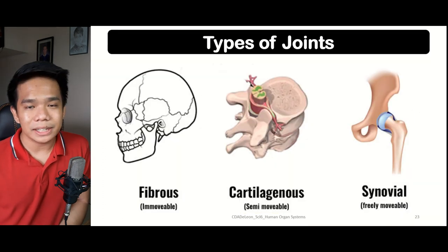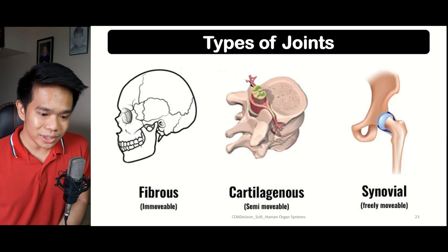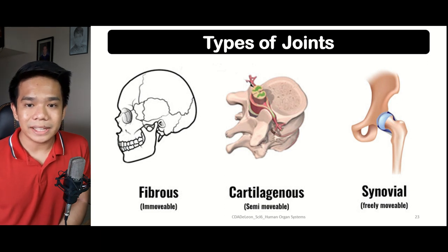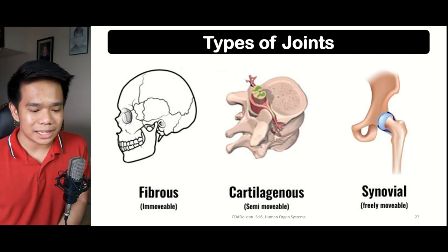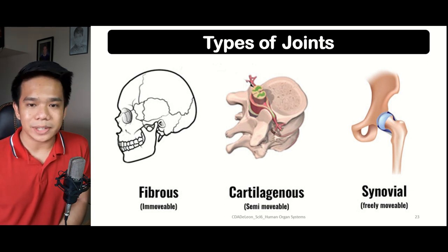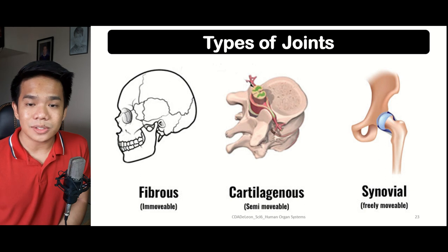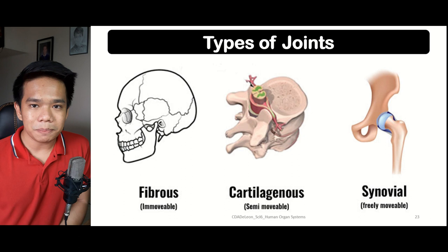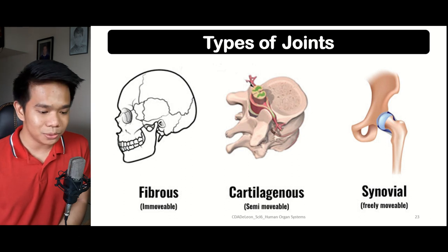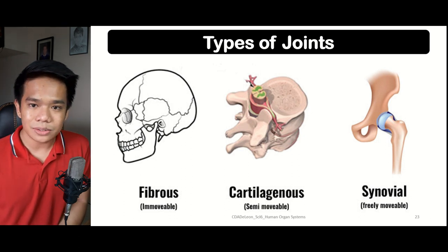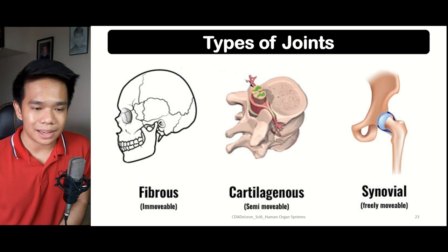Now let us explore the different types of joints. Joints are classified according to their movement — they can be fibrous, cartilaginous, or synovial. A fibrous joint is considered a fixed or immovable joint, meaning these are joints that cannot do any movement. The best example is the sutures found within the surface of the skull — the crack-like structures you can see within the skull itself.